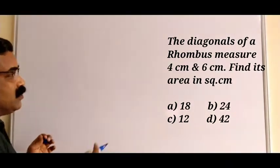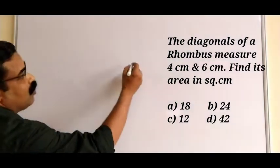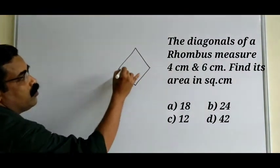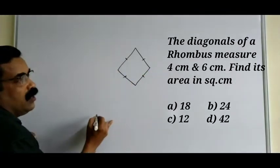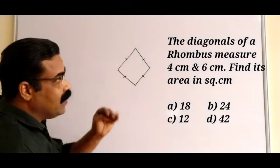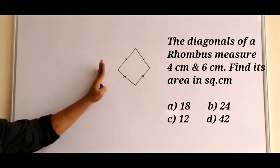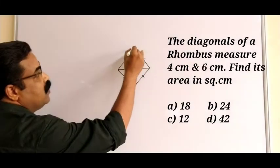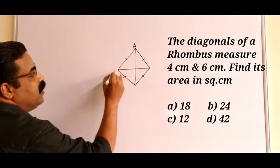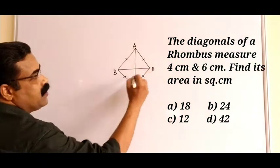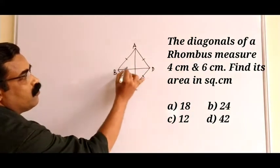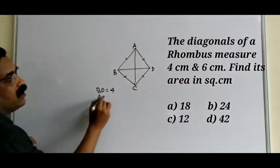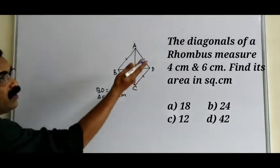A rhombus has all four sides equal. In this question, the diagonals measure 4 centimeters and 6 centimeters. Let us name the vertices A, B, C, D. So BD equals 4 centimeters and AC equals 6 centimeters, as given in the question.